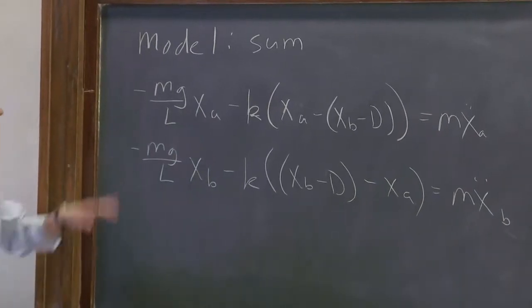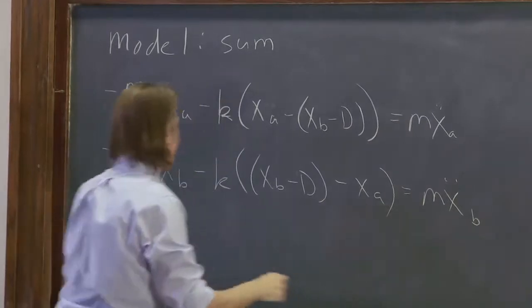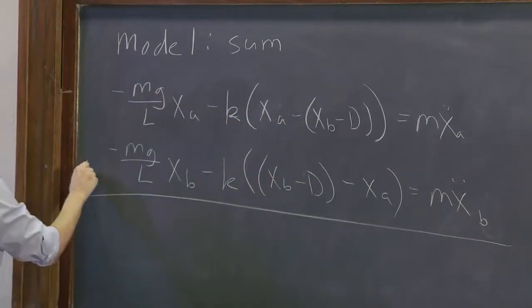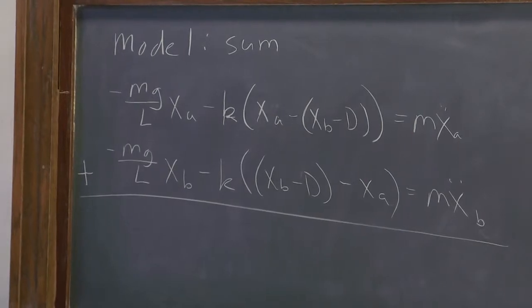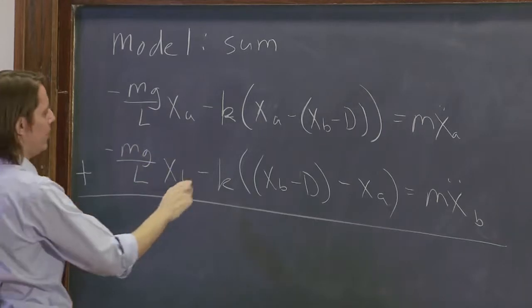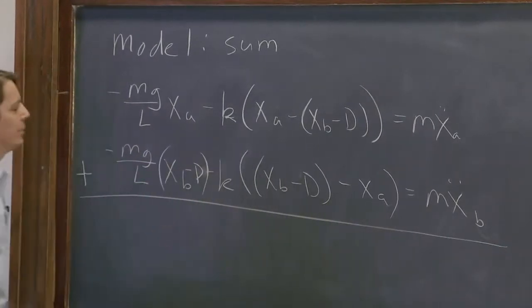So we're literally going to add them. If this equals this and this equals this, then this plus this has to equal this plus this. So I'll do the grade school version of adding these equations and put the line there and a big plus symbol there. And we'll see what we get. How is that possible? There we go.